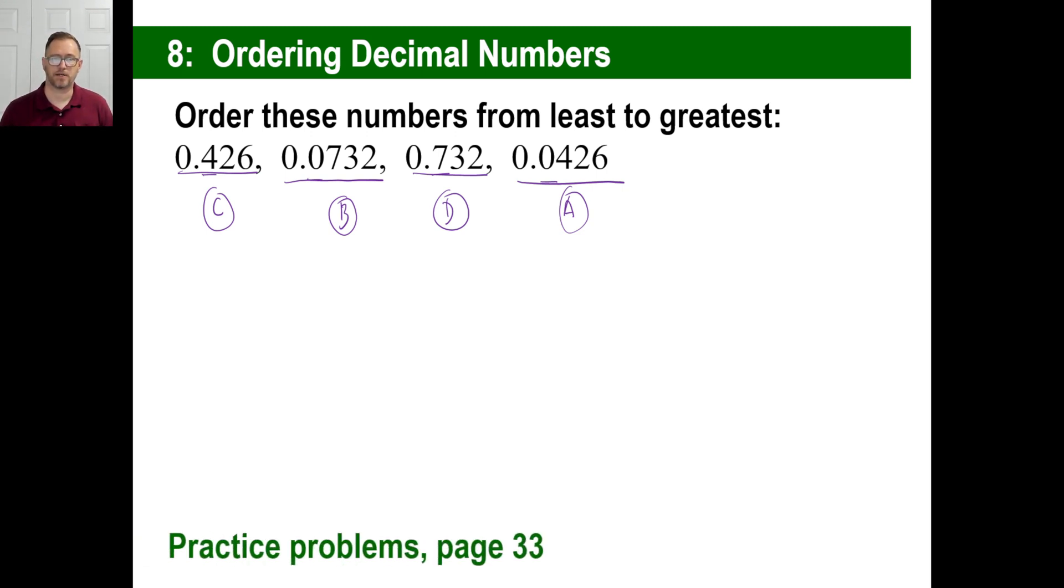Okay. All right. Let's take a look at the practice problems on page 33. Go ahead and do A and then pause it and then come back when you're ready. Okay. A is 4162 times 100. You're just going to add two zeros. So the answer is going to be 416,200.